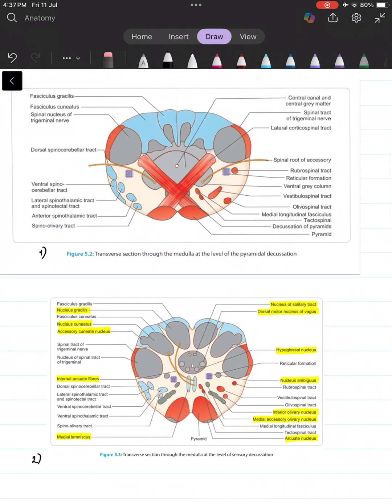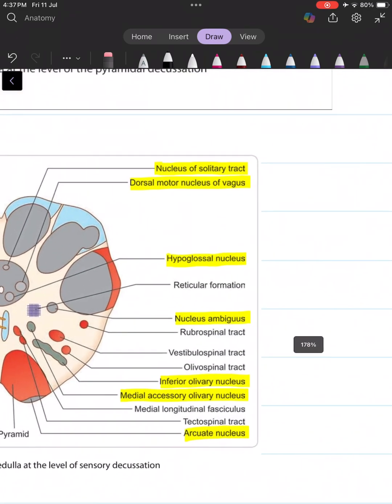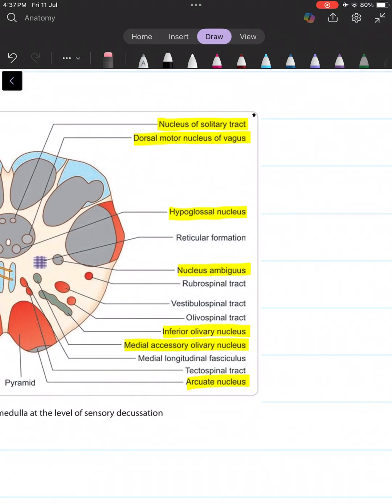Let's compare and contrast this with the previous level so that we remember and understand both better. I have highlighted in yellow whatever is unique to this transverse section. For example, the nucleus of solitary tract or the nucleus tractus solitarius.